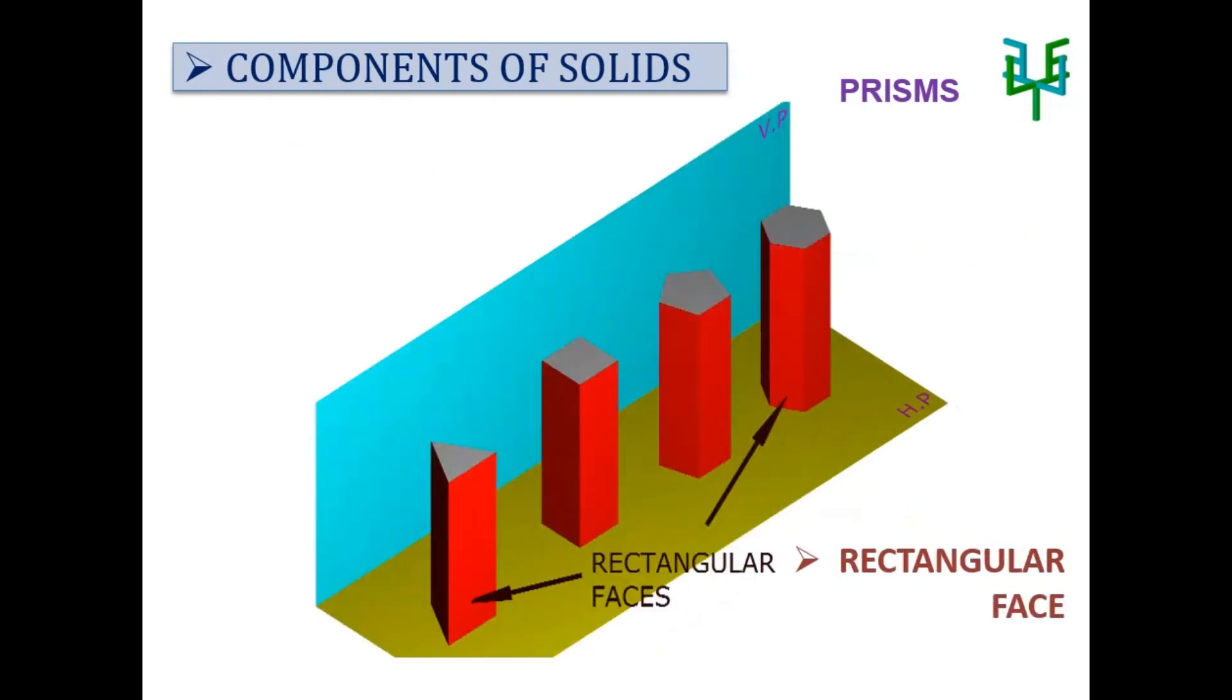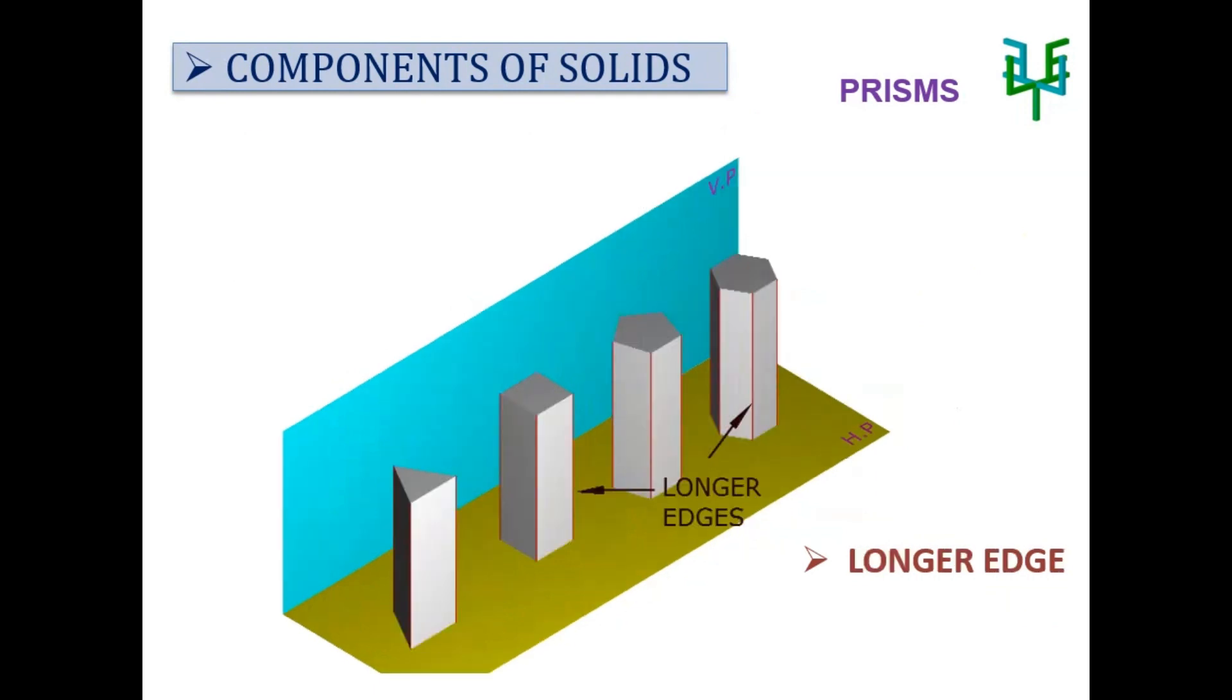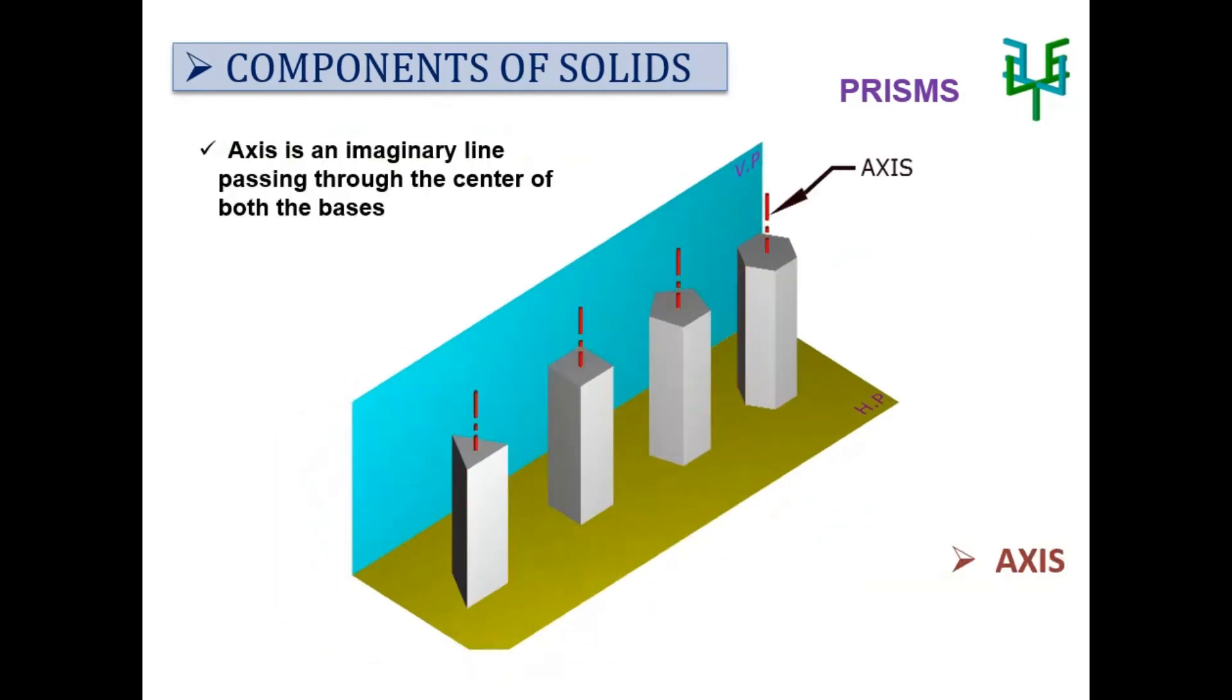Rectangular face: these are the faces at the side of the prism. Longer edges: these are the vertical edges between the rectangular faces. Axis: it is an imaginary line passing through the center of both the bases.